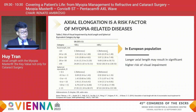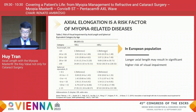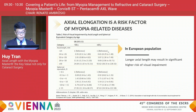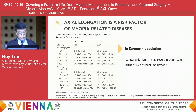Indeed, recent evidence from the European population has shown that longer axial length may result in a significantly higher risk of visual impairment, especially when the axial length exceeds 26 millimeters or longer.